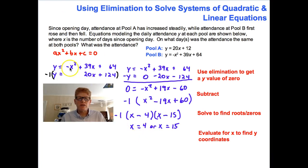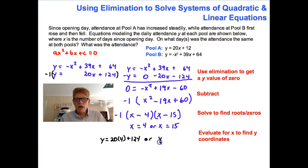Remember that we can substitute our x values into either one of our original equations. So I'm going to use the easy one. I'm going to use the line, the linear equation, and I'm going to say y is equal to 20 times 4 plus 124, or y is equal to 20 times 15 plus 124. And then I'll punch that into my calculator, which will give me y is equal to 204, or y is equal to 424.